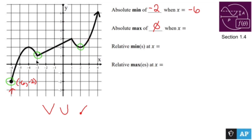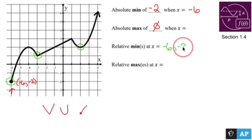So we have three relative minimums at negative six, negative three, and positive two.